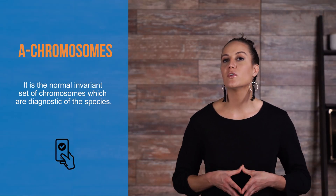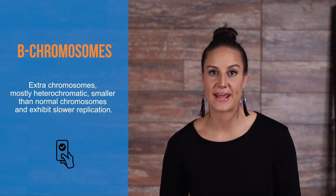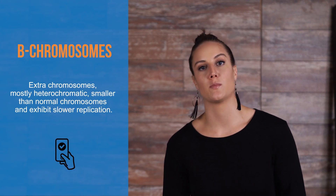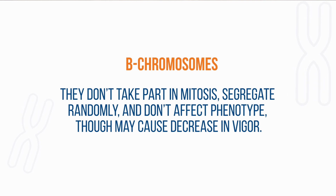Types of Eukaryotic Chromosomes. A-chromosomes are the normal, invariant set of chromosomes, which are diagnostic of the species. B-chromosomes are extra chromosomes, mostly heterochromatic, smaller than normal chromosomes, and exhibit slower replication. They don't take part in mitosis, segregate randomly, and don't affect phenotype, though may cause a decrease in vigor. These are not homologous with any of the normal chromosomes. They derive from autosomes, cause deleterious effects in animals and plants, and affect fertility when present in large amounts.